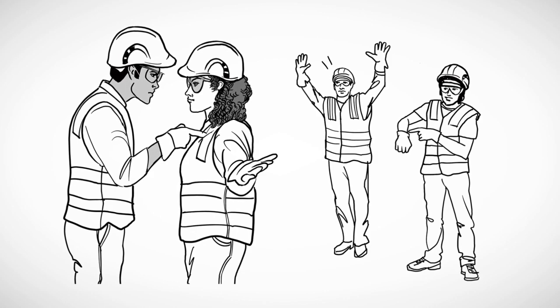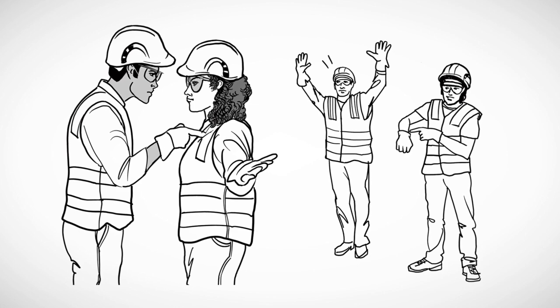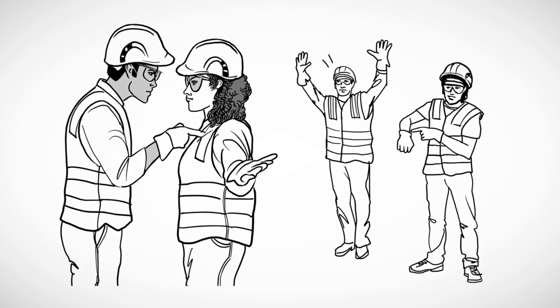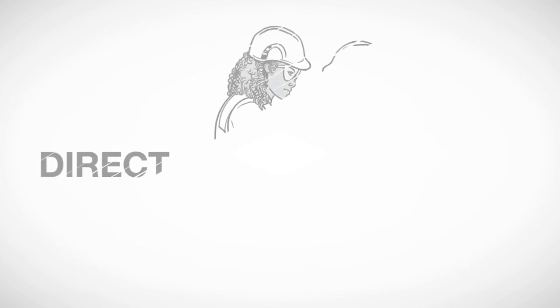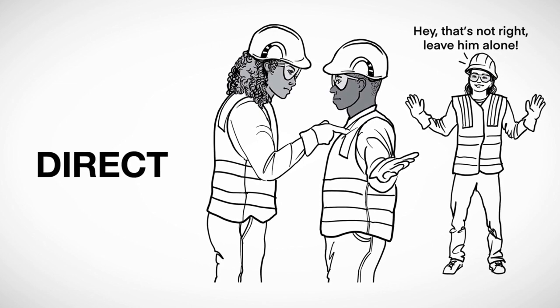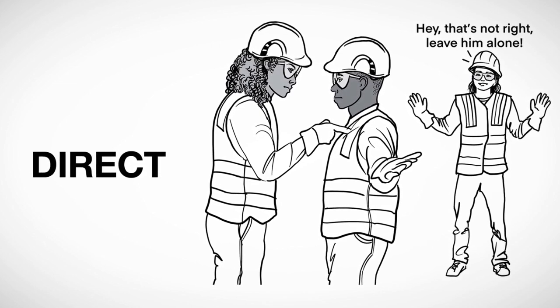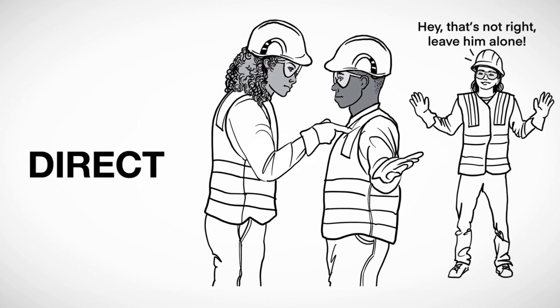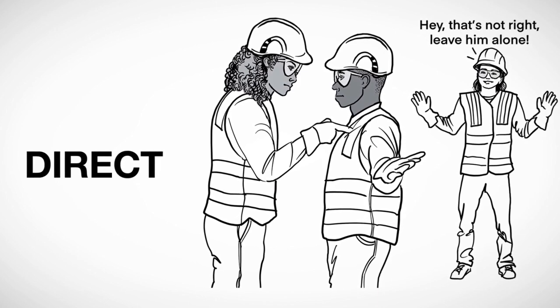If you are witnessing an event as it is occurring, please consider one of the 5 Ds of Bystander Intervention. Direct. Assess your safety first. Speak up about the harassment. Remain calm, yet be confident, and assertive.